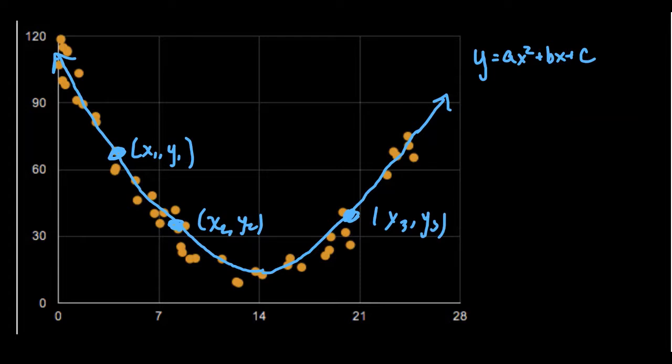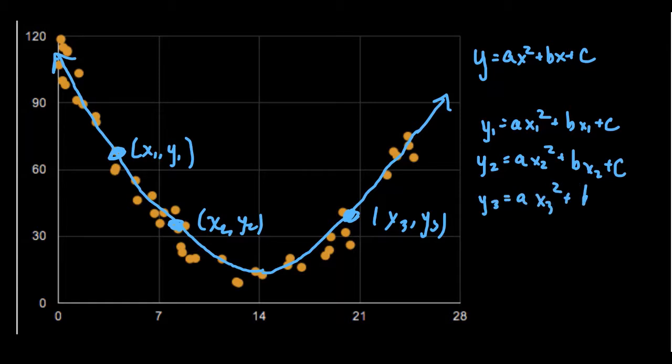And then we can plug these into the equation. Because when we replace x with a specific x-coordinate and y with a specific y-coordinate, that gives you points on the parabola. So we get something like y1 equals ax1 squared plus bx1 plus c. We'd also get y2 is equal to ax2 squared plus bx2 plus a constant. And y3 equals ax3 squared plus bx3 plus c.